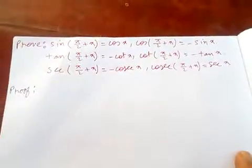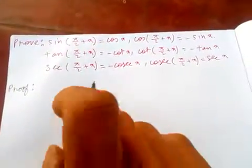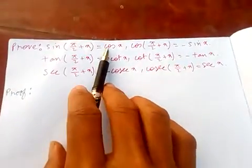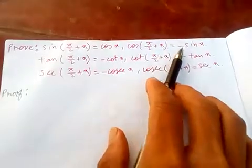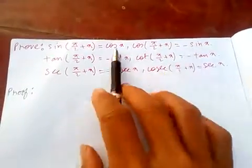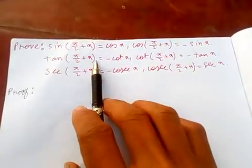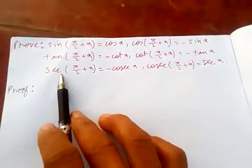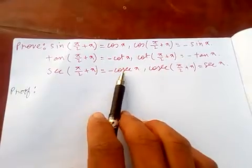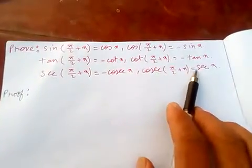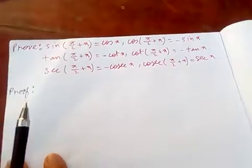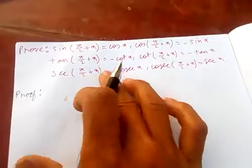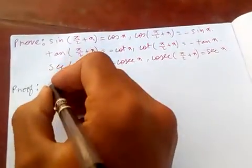Hello friends, today I'm going to prove that sin(90+x) = cos(x), cos(90+x) = -sin(x), tan(90+x) = -cos(x), and cosec(90+x) = sec(x). I'm going to prove these trigonometric identities using Euler's formula.